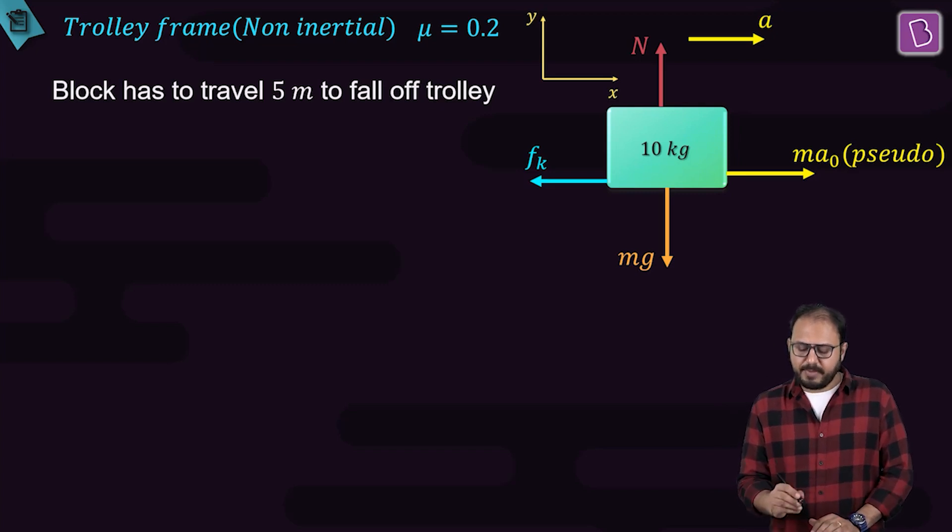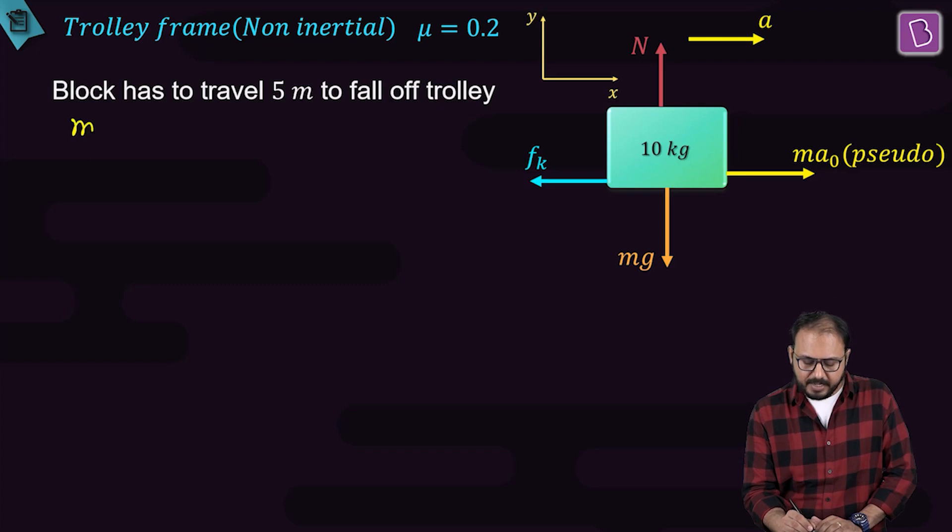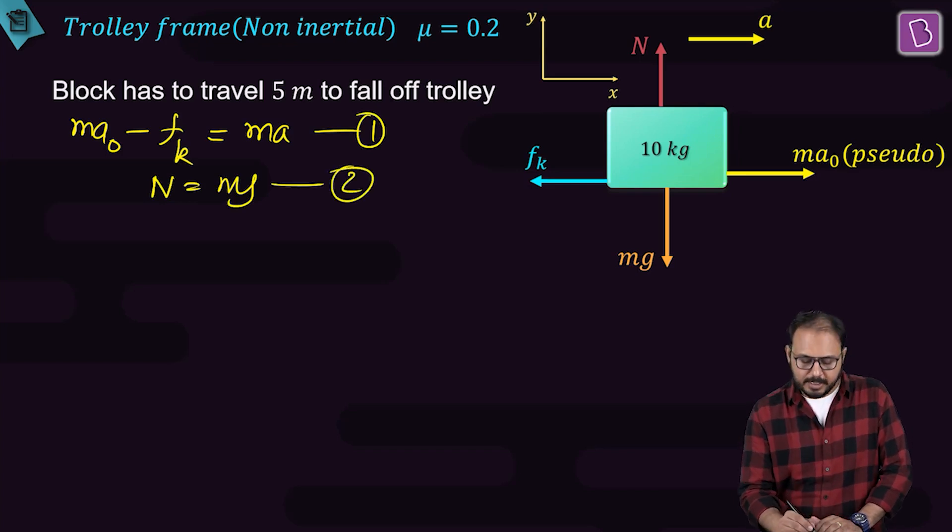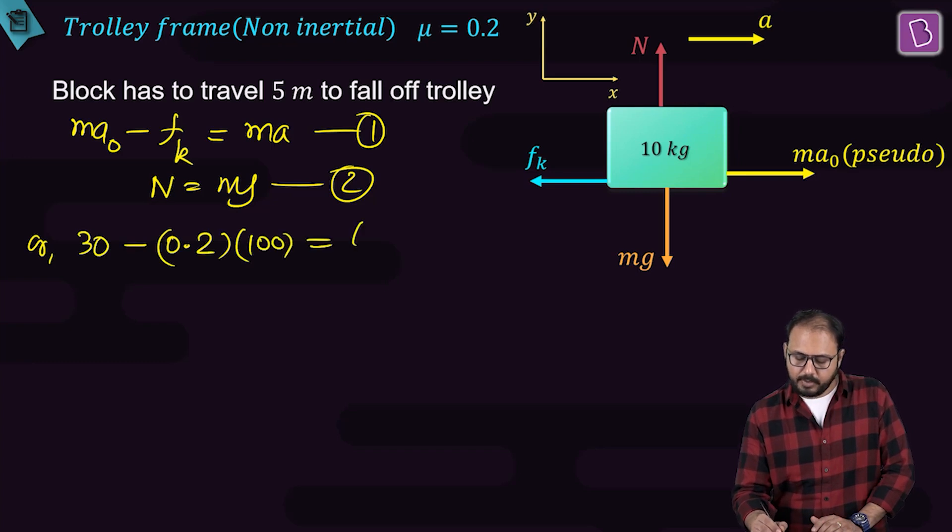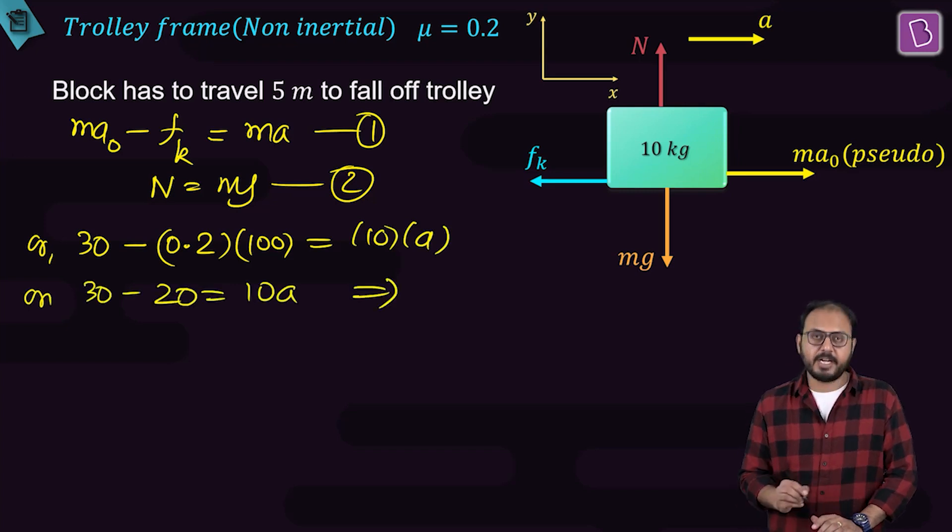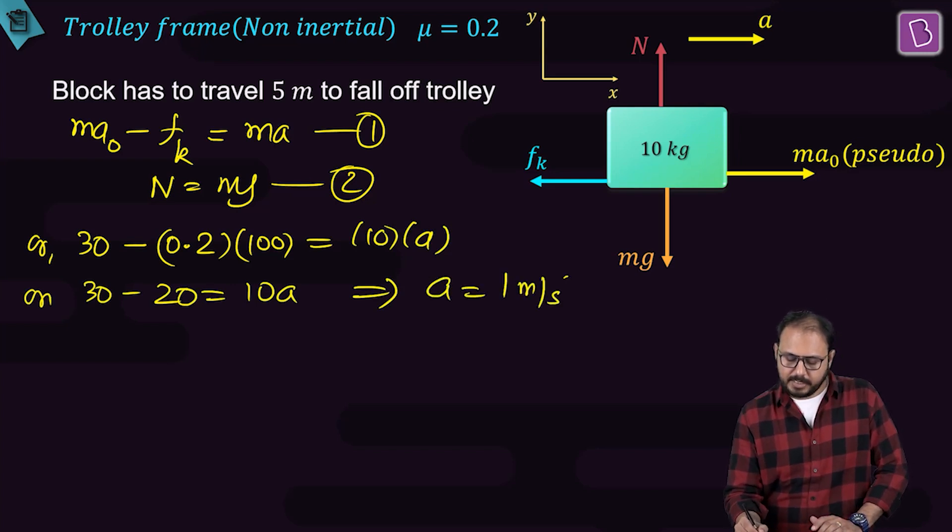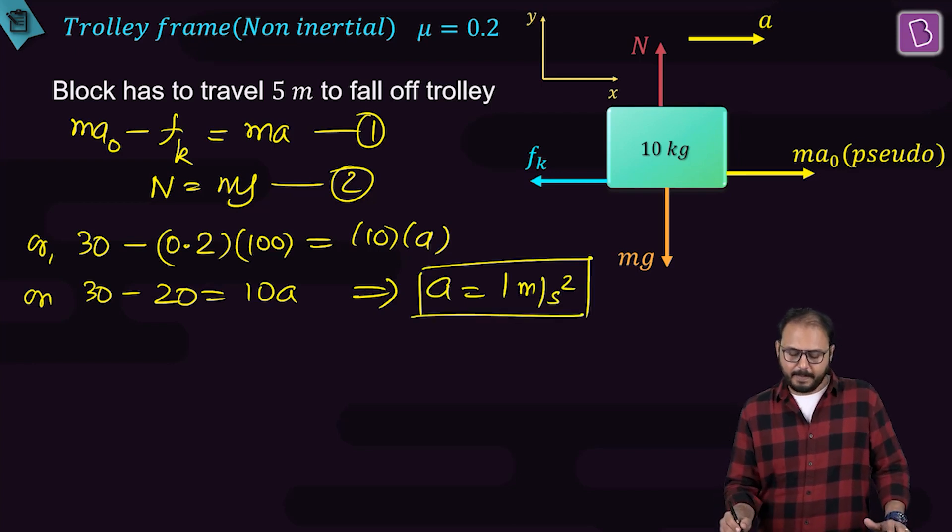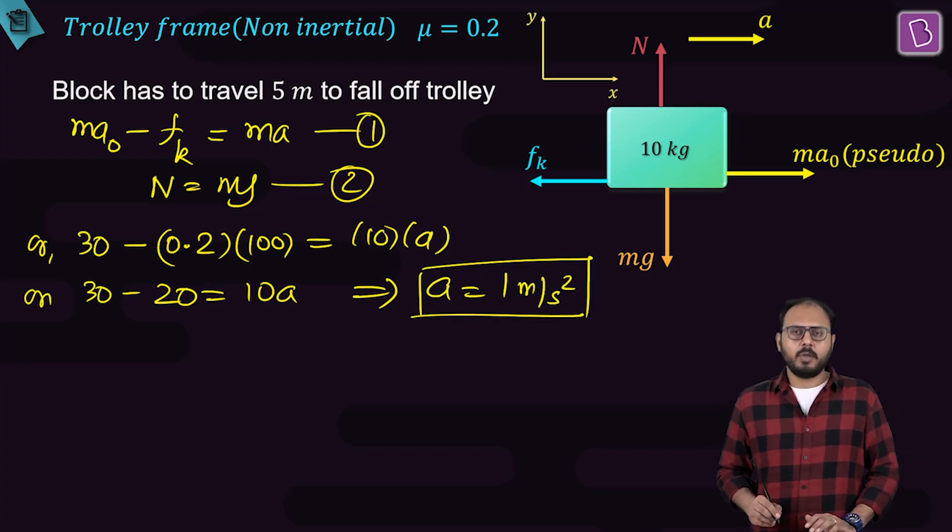The block has to travel 5 meter to fall off the trolley. I need the value of A. How do I find the value of A? Ma0 minus Fk is equal to Ma, and N is equal to mg. Ma0 is 10 times 3 is 30. Fk is 0.2 times 100 is equal to 10A. 30 minus 20 is equal to 10A, and A is 1 meter per second square.